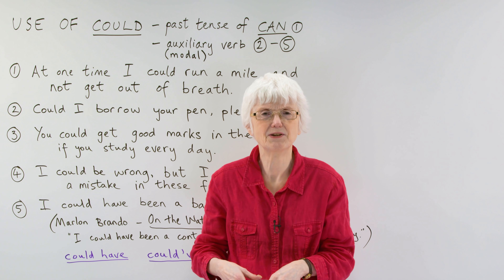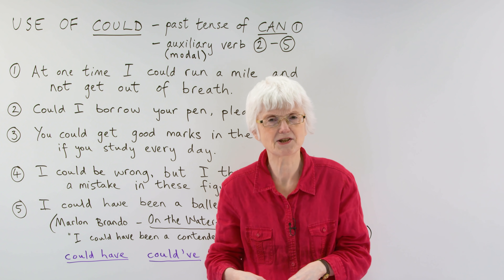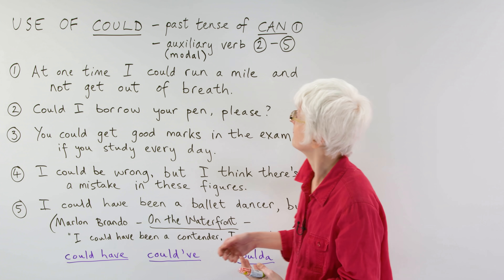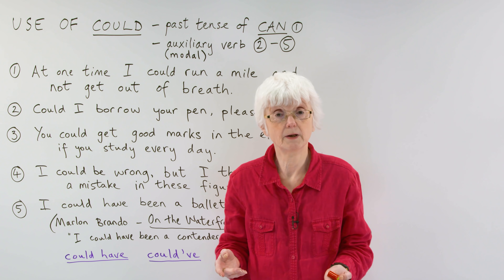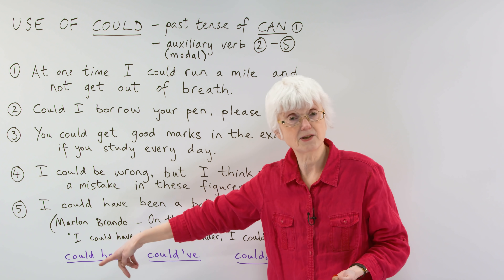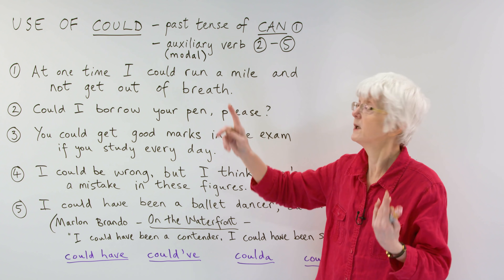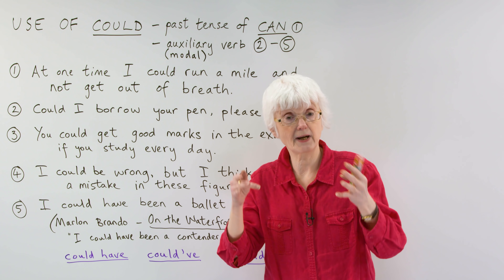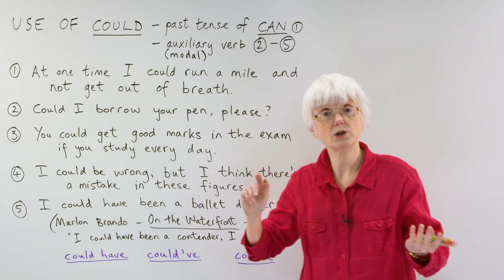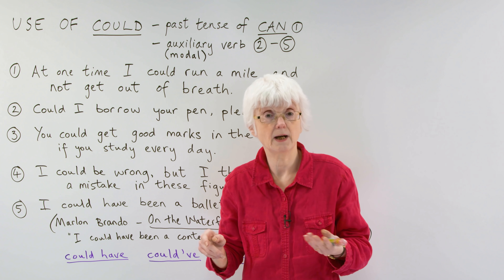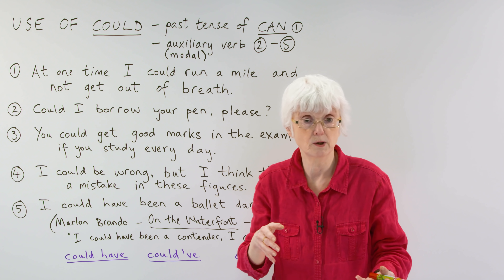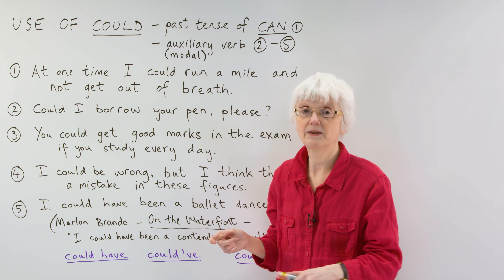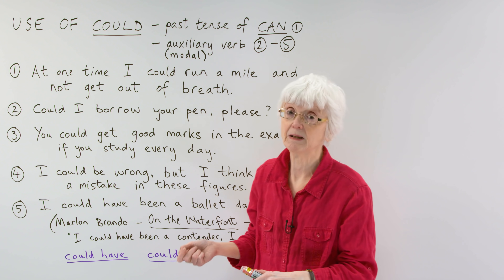Hello. I'm Gill at www.engvid.com, and today we have a lesson on an auxiliary modal verb: could, the use of could. We have five ways that it's used here. Could comes either as the past tense of the verb can, which is also an auxiliary modal verb, or it's used as an auxiliary verb combined with other verbs. I hope it becomes clearer with the sentences to illustrate how it can be used.